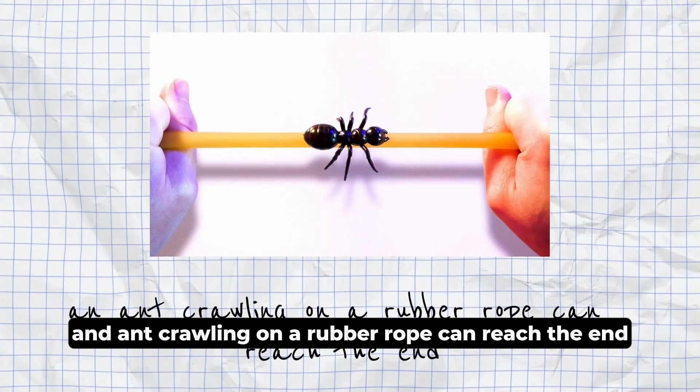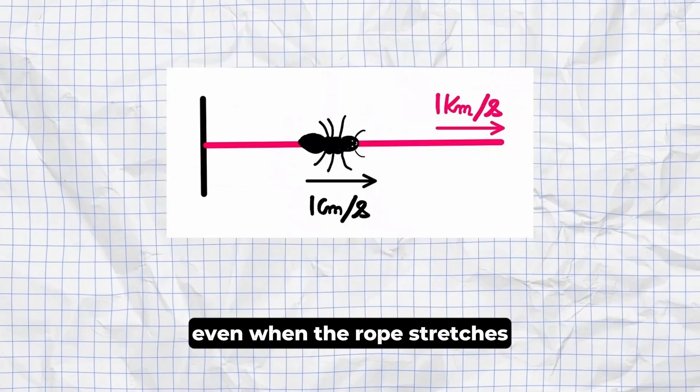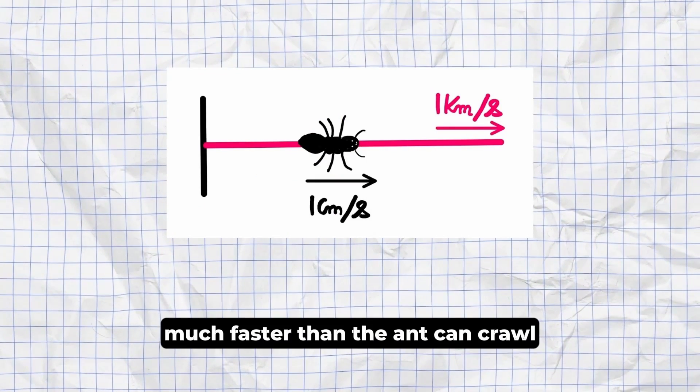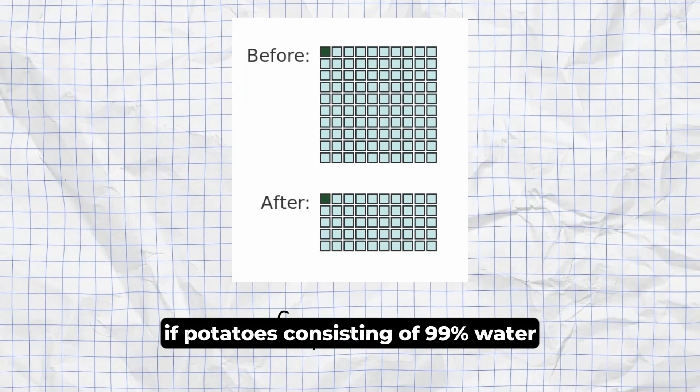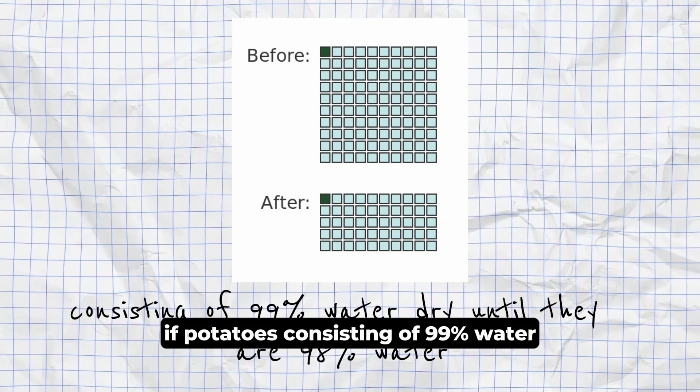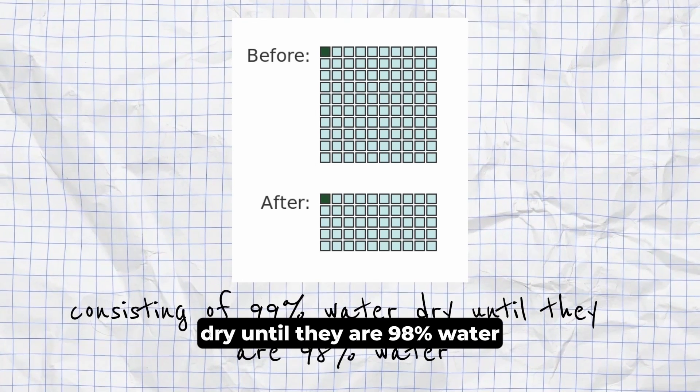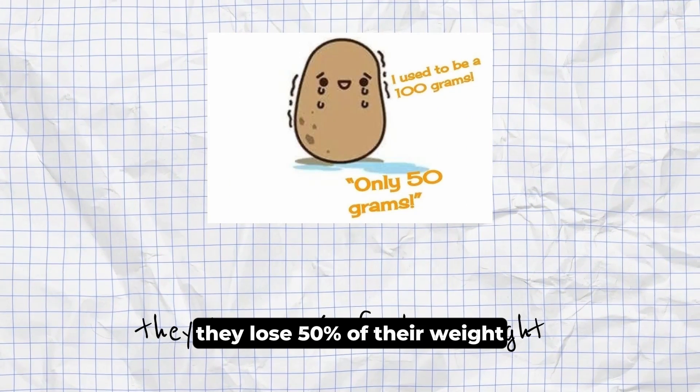Ant on a Rubber Rope Paradox. An ant crawling on a rubber rope can reach the end, even when the rope stretches much faster than the ant can crawl. Potato Paradox. If potatoes consisting of 99% water dry until they are 98% water, they lose 50% of their weight.